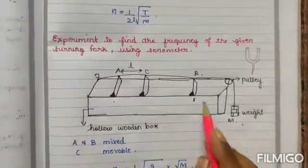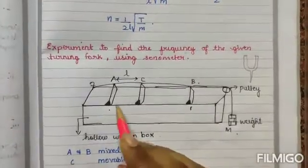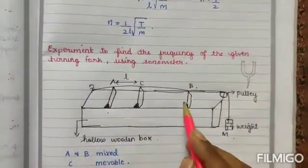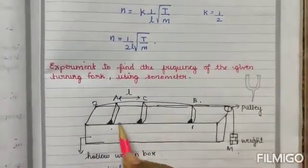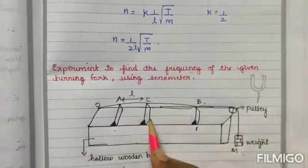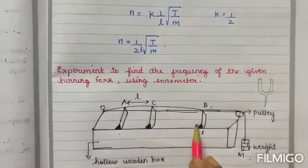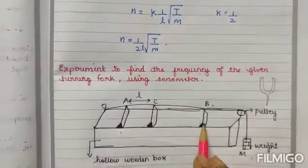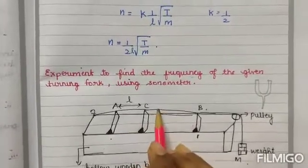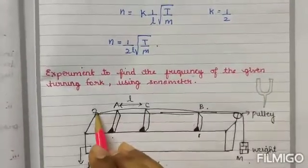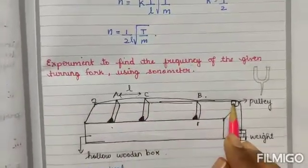The sonometer is a hollow wooden box. There are three bridges — knife edges — A, B, and C. A and B are fixed, while C is a mobile bridge.